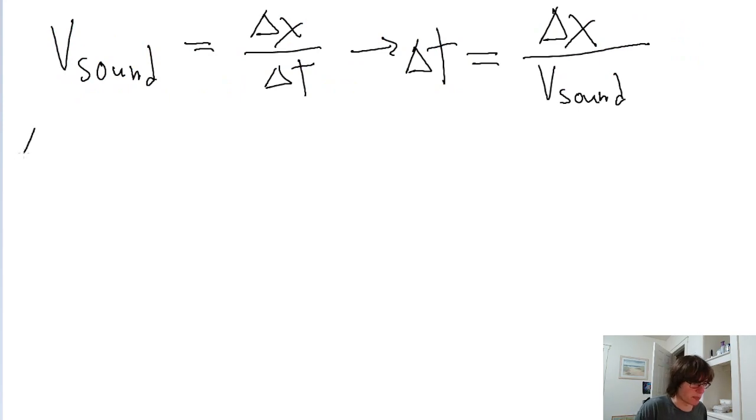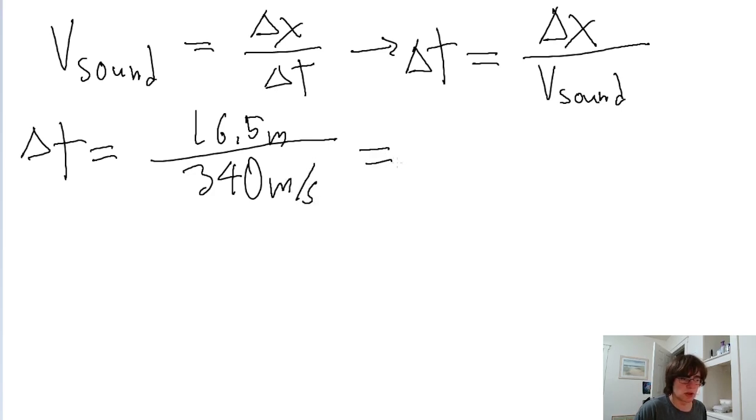So the time that it took for the sound to travel is equal to the length of the lane, 16.5 meters, divided by the speed of sound, 340 meters per second, which is equal to 4.85 times 10 to the negative 2 seconds.